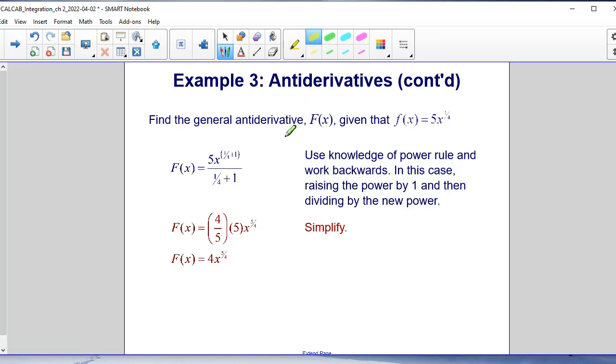Our next step would be to simplify. Here we have a denominator of 1 fourth plus 1, which is 5 fourths, and dividing by 5 fourths is the same as multiplying by the reciprocal. So 4 fifths times 5 would leave us with 4. We would have F of X is equal to 4x, and our exponent would be 5 over 4.